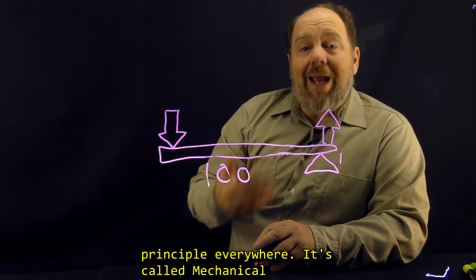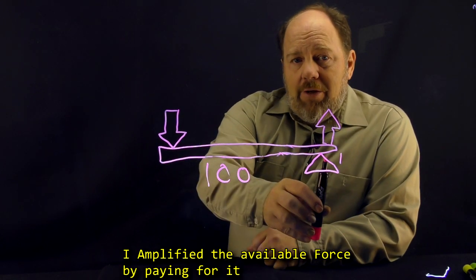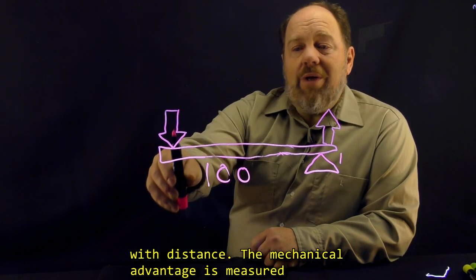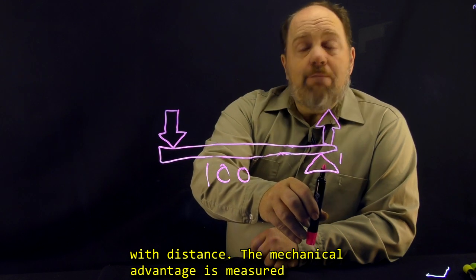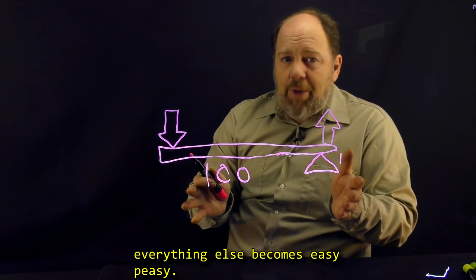It's called mechanical advantage. I amplified the available force by paying for it with distance. The mechanical advantage is measured as a ratio, and once you spot that ratio, everything else becomes easy peasy.